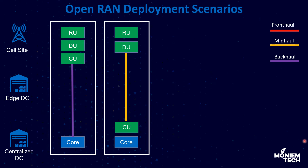The second scenario involves moving the CU to a centralized data center to handle many DUs. In this case we must keep in mind the midhaul latency and bandwidth requirements. The CU is moved to a centralized data center. The main difference between a centralized data center and an edge data center is distance from the cell site — for example, around 18 to 20 kilometers away. The centralized data center can also host core network components like EPC or 5G core.